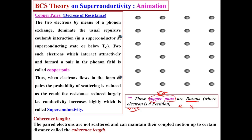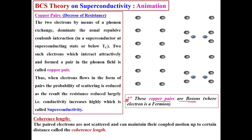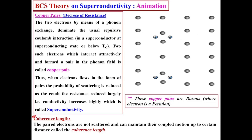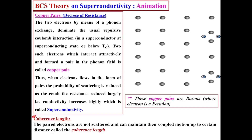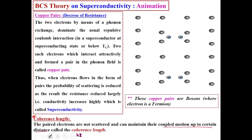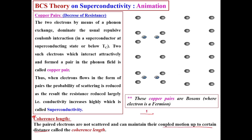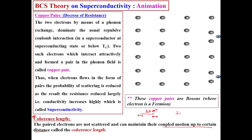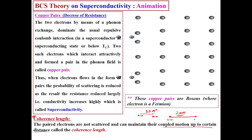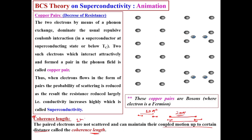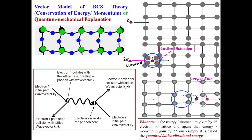An important point to remember: the Cooper pair is considered as one type of particle — a boson. We know that an electron is a fermion with half-integral spin, but a boson has integral spin. So Cooper pairs are bosons, not fermions. Also, paired electrons are not scattered and can maintain their coupled motion up to a certain distance, which is a material property. This length — for example 10 or 20 angstroms depending on the material — is called the coherence length.